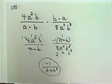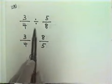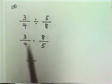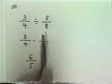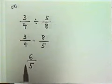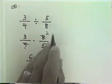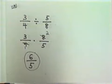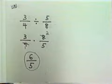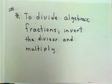What about division? You already know how to divide common fractions — you invert the divisor and multiply. So if you have 3 fourths divided by 5 eighths, you rewrite it as 3 fourths times 8 fifths. Then you can reduce before you multiply: 4 goes into 4 once, 4 goes into 8 twice. 3 times 2 is 6, 1 times 5 is 5, so the answer is 6 fifths. The rule for algebraic fractions is exactly the same: to divide algebraic fractions, invert the divisor and multiply.